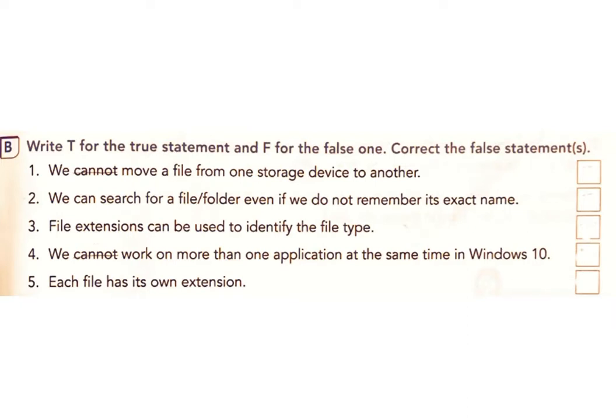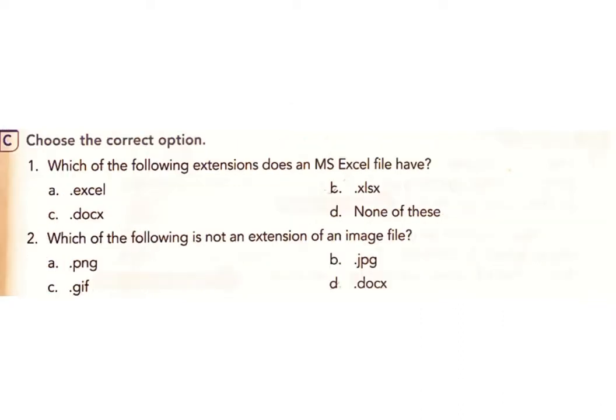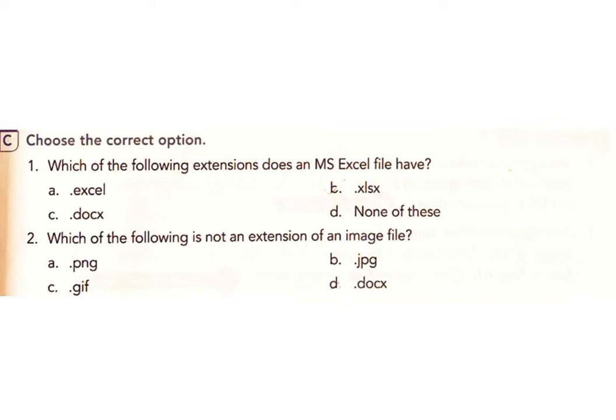Question 5: Each file has its own extension. Answer: True. Section C: Choose the correct option. Question 1: Which of the following extensions does an MS Excel file have? Options: A) Excel, B) .xlsx, C) .docs, D) None of these. Answer: B) .xlsx.